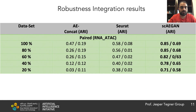We then evaluated the robustness of SEGAN by removing a certain percentage of cells from each dataset to see how it affects performance of SEGAN and other methods, using different ratios of cells. The results show that SEGAN outperforms other methods in this robustness task as well.